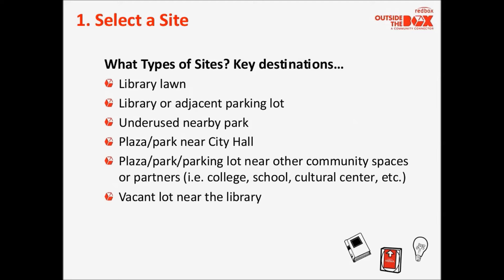For example, it could be the library lawn or, as we've done in the past, the library parking lot, or even the parking lot of an adjacent institution. An underused park would be a great option as well, or a park or plaza near City Hall — parks, plazas, even parking lots near community spaces like the college, the school, the cultural center, or City Hall. These are destinations that help connect the library both physically and programmatically to the rest of the community.